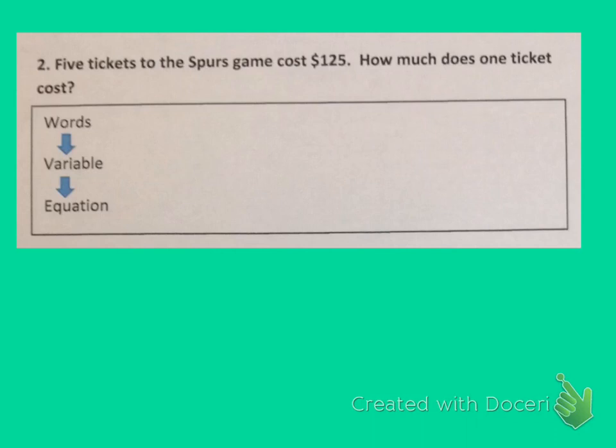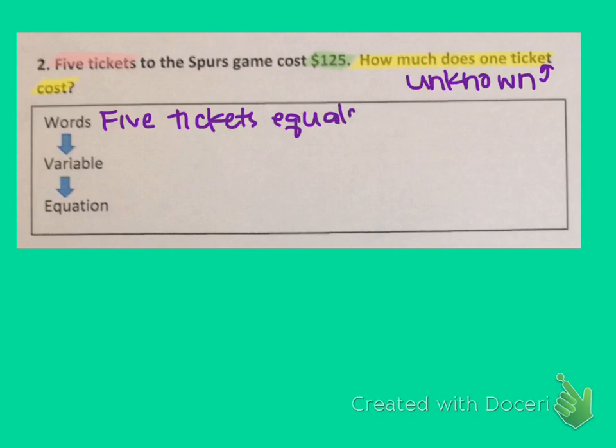Five tickets to the Spurs game cost $125. How much does one ticket cost? Well, I know that five tickets are going to cost $125. I do not know how much one ticket costs. That is our unknown, so that's what the variable will need to be. We need to rephrase this using only the most important words, and those words would be five tickets equals $125. We said our unknown was how much one ticket cost. Let's let T represent ticket.